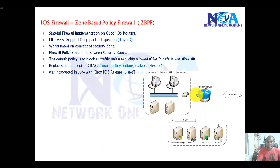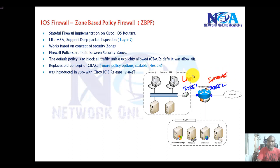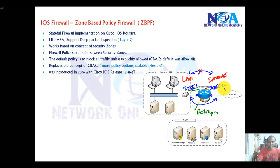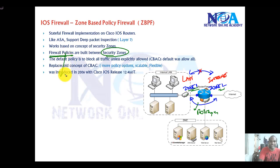In Zone-Based Firewalls, interfaces are associated into zones. You can name them something like Zone 1, Zone 2, or simply 'LAN' and 'Internet'. By default, no traffic flows between these zones. To allow specific traffic between zones, you must configure policies that define what traffic is allowed and in which direction. The Zone-Based Firewall works based on these security zones and firewall policies.